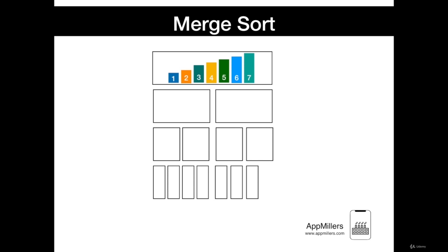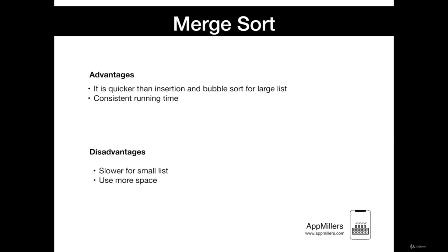There are many advantages and disadvantages of merge sort. One main advantage is that it is quicker for large lists, because unlike insertion and bubble sort, it does not go through the whole list several times. The second advantage is that it has a consistent runtime, carrying out different parts in similar times. The disadvantages are: it is slower compared to other sort algorithms for smaller tasks; it goes through the whole process even if the list is already sorted; and it uses more memory space to store sub-elements of the initial split list.